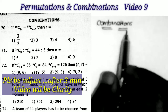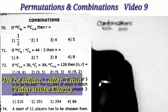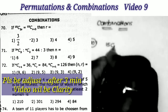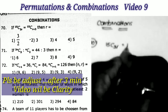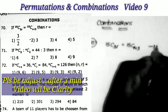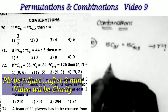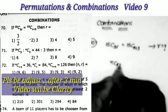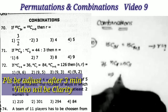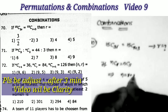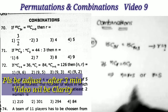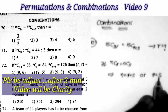In this video I start the combination topic. This is sum number 17. The question is: if 15C(3R) = 15C(R+3), then what is the value of R? To solve this question we apply the formula: if nCr = nCs, then either n = r + s, or r = s.